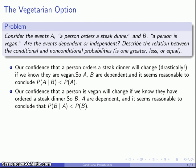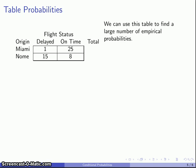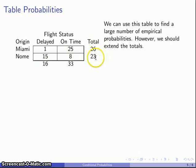These types of conditional probabilities are particularly common when we're presented with data in tables. Let's consider a made-up table of flight data, which indicates whether a flight is delayed or on time, and whether it originates in Miami, Florida or Nome, Alaska. We can use this table to find empirical probabilities. It'll be convenient to extend the totals — for Miami flights, for Nome flights, for delayed flights, on-time flights, and the grand total. An important check: the totals should match, and at 49, they do.